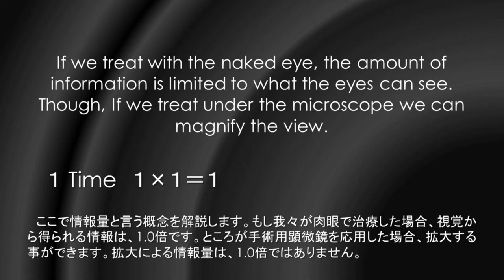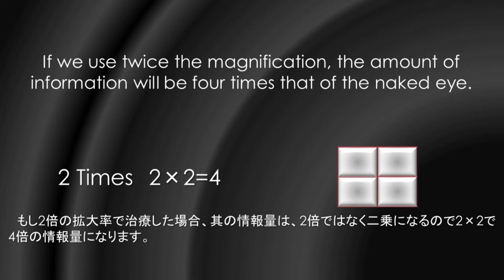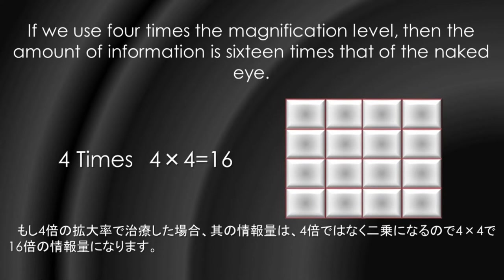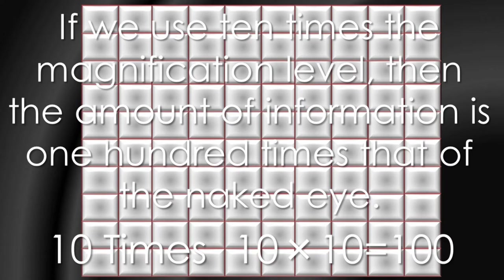If we treat with the naked eye, the amount of information is limited to what the eyes can see. If we treat under the microscope, we can magnify the view. If we use twice the magnification, the amount of information will be four times that of the naked eye. If we use four times the magnification level, the amount of information is 16 times that of the naked eye. If we use ten times the magnification level, the amount of information is 100 times that of the naked eye.